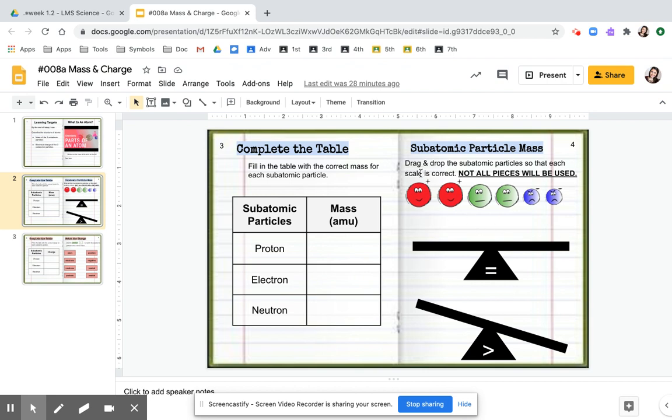So what you're going to be doing is grabbing your subatomic particles. So here you have your protons, neutrons, and electrons. And you're going to drag and drop them so that each scale is correct.